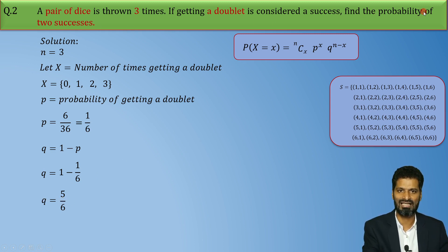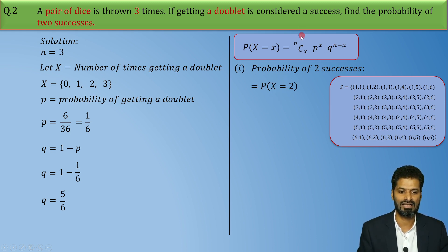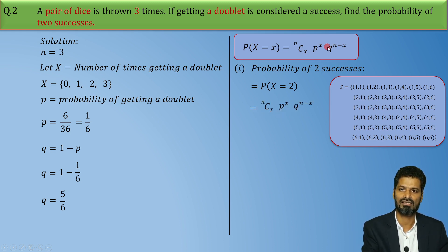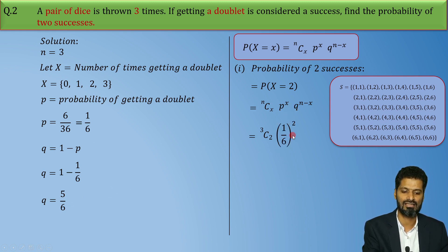Now after this, the probability we need to find is P(X = 2). To find this probability, we directly use the formula: nCx * p raised to x * q raised to n minus x. Now N is 3 and X is 2, so it becomes 3C2, P = 1/6 so P raised to X is (1/6) raised to 2, and Q = 5/6 so Q raised to (N minus X) is (5/6) raised to (3 minus 2).